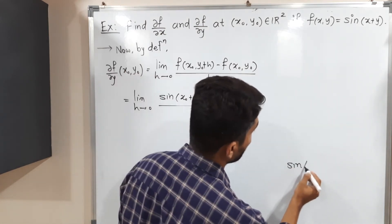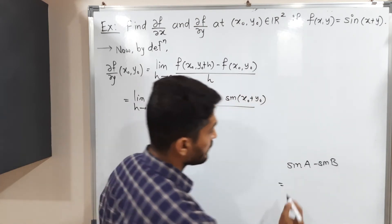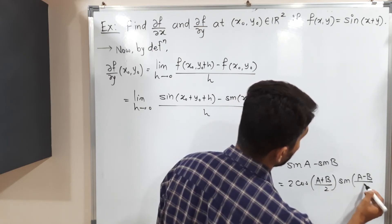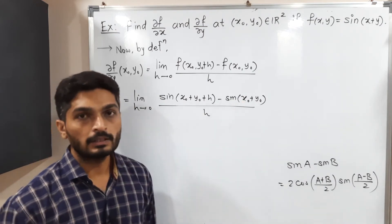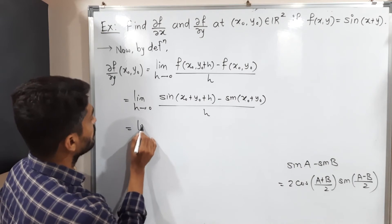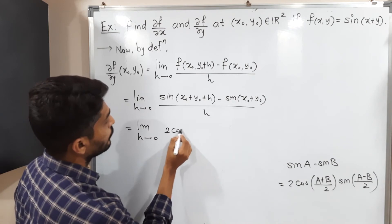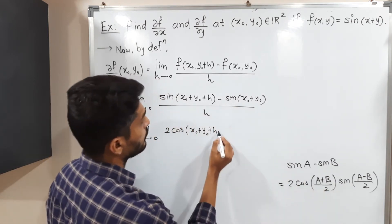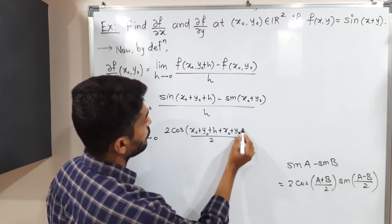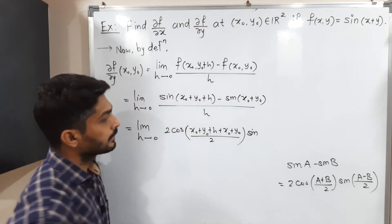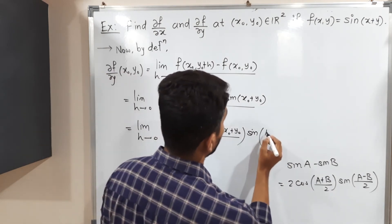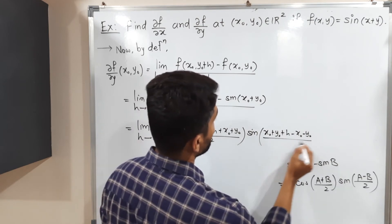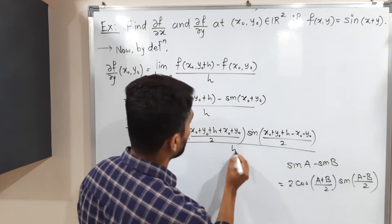We apply the same formula sin A − sin B = 2 cos((A+B)/2) sin((A−B)/2), where A = x₀ + y₀ + h and B = x₀ + y₀. This gives: limit h→0 of 2 cos[(x₀ + y₀ + h + x₀ + y₀)/2] · sin[(x₀ + y₀ + h − x₀ − y₀)/2] / h. In the sine bracket, x₀ − x₀ and y₀ − y₀ cancel, leaving only h/2.